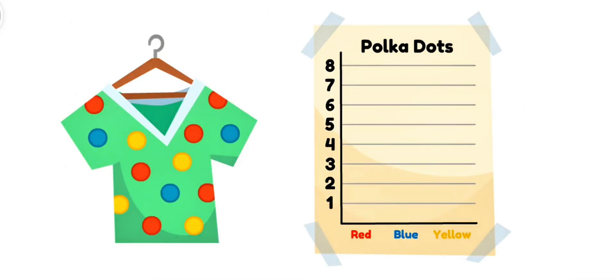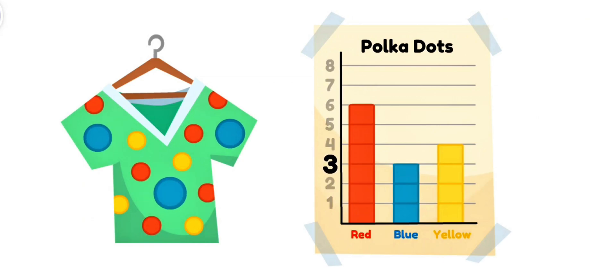How many polka dots are on my new shirt? Let's count by color. The first is red. Let's mark it on the graph. The next dot is blue. We'll put it in the blue column. When we're done counting all the dots, the graph will look like this. There are six red dots, three blue dots, and four yellow dots. Most of the polka dots are red!